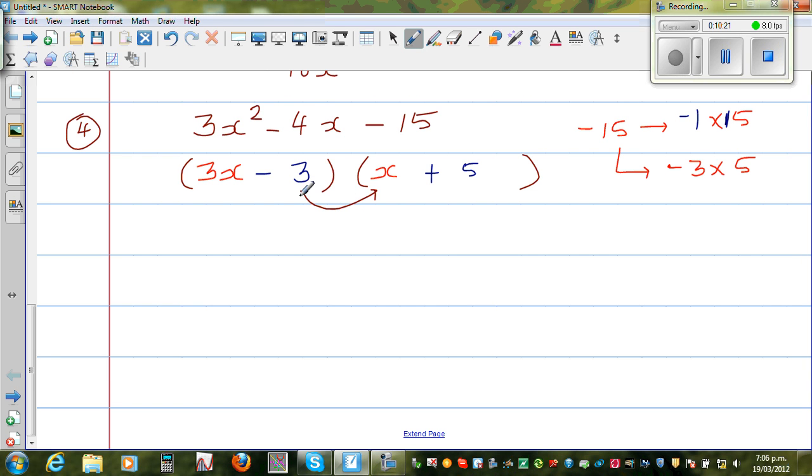This is minus 3 times x is minus 3x, and 3x times 5 is 15x. So you get minus 3x plus 15x, which is equal to 12x. But we want minus 4x. So this is not the choice. This is not going to work.